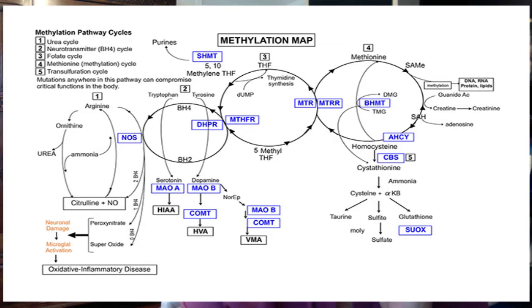It is an easier pathway to activate. The first thing we do in this protocol — the Yasko protocol — is to get methylation happening, because of all the important functions of methylation that I talked about in the last two videos. The easiest way to get methylation happening is through the BHMT pathway — betaine homocysteine methyltransferase. I'm going to put up the methylation pathway diagram for a few minutes, just to show you where you are and where the BHMT pathway is.